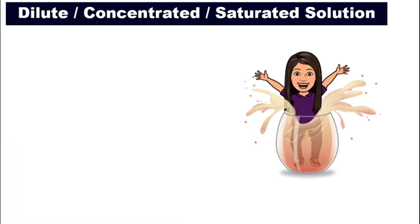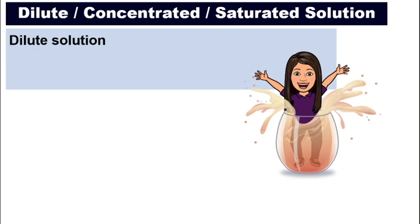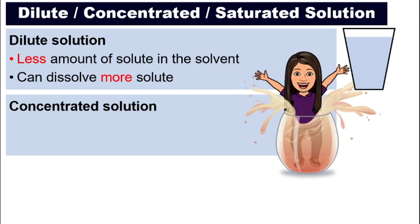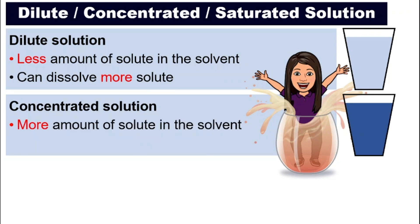And for solution, there are three different types: dilute solution, concentrated solution, and also saturated solution. What are the differences between these three? For dilute solution, there's only a little bit of solute in it, so it can dissolve more solute — it has a lot more space. Concentrated solution has a lot more amount of solute in the solvent and it can only dissolve a little bit more solute compared to dilute solution.